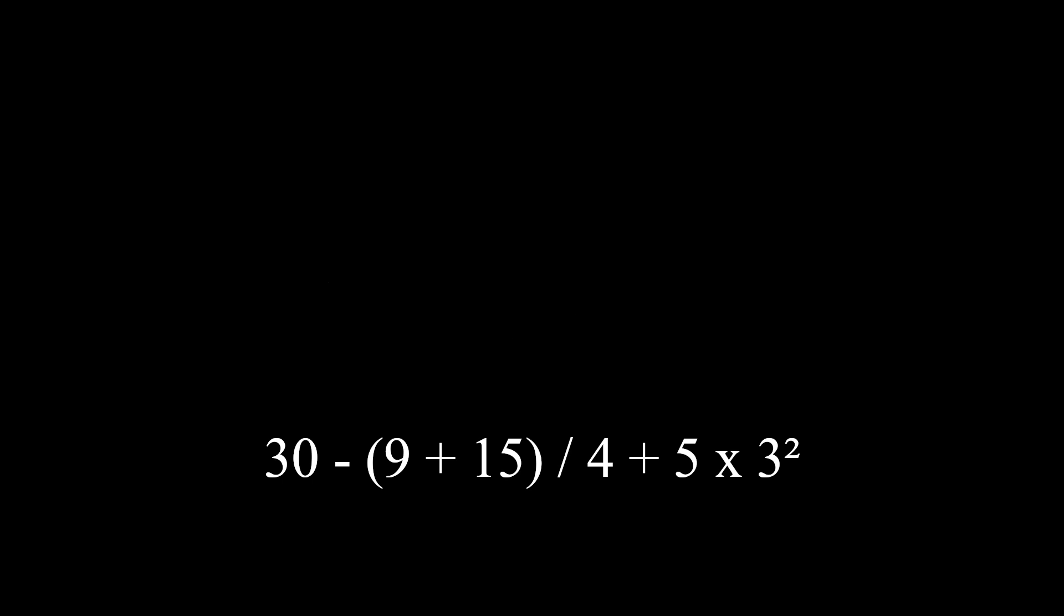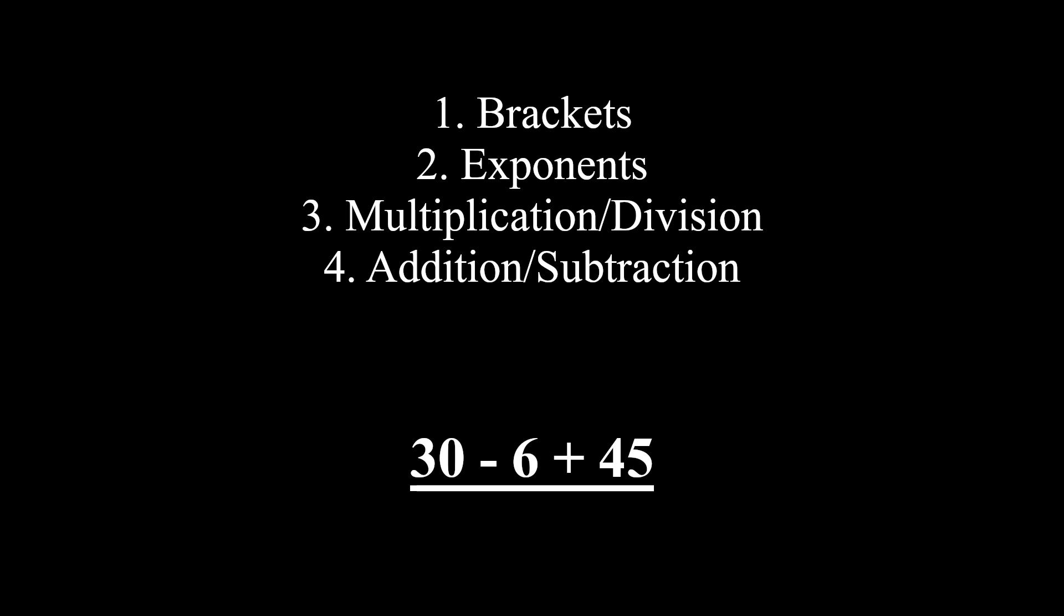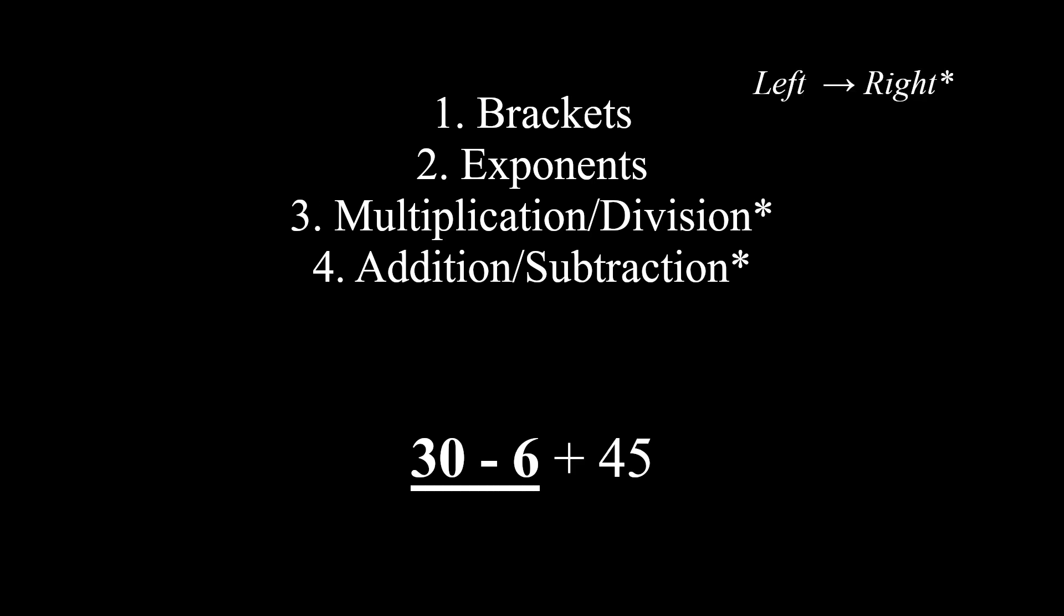The order of operations are the rules regarding which procedures to perform first when evaluating a mathematical expression. They are usually given as follows: first you evaluate what's inside brackets, then you evaluate exponents and roots, followed by multiplication and division, and finally addition and subtraction. And whenever two operators are of equal precedence, you evaluate whichever is to the left first.